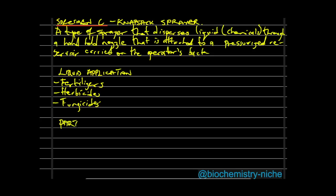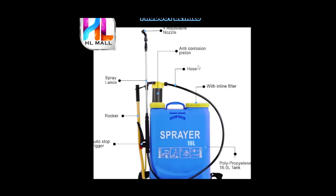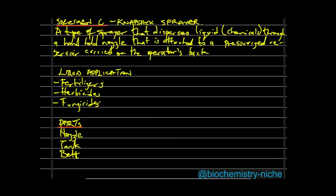The major parts of a knapsack sprayer include the nozzle (made of metal), the tank, and the belt — used to fasten it to the operator's back. For a full list of labeled parts, refer to the diagram.